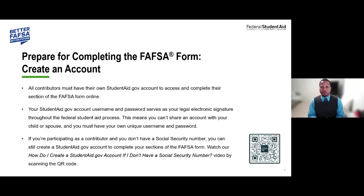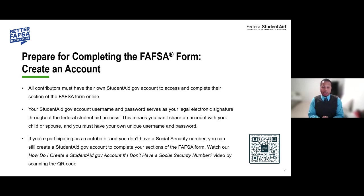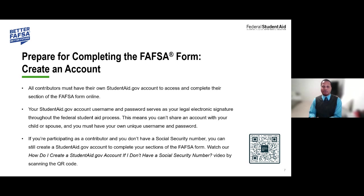When completing the FAFSA, all contributors must have an FSA ID. You can visit StudentAid.gov or Google 'creating an FSA ID' to get started today. Every parent who is a required contributor must have their own separate FSA ID. The student needs one, parent one needs one, and parent two needs one. This serves as your electronic signature when signing the FAFSA form at the end.